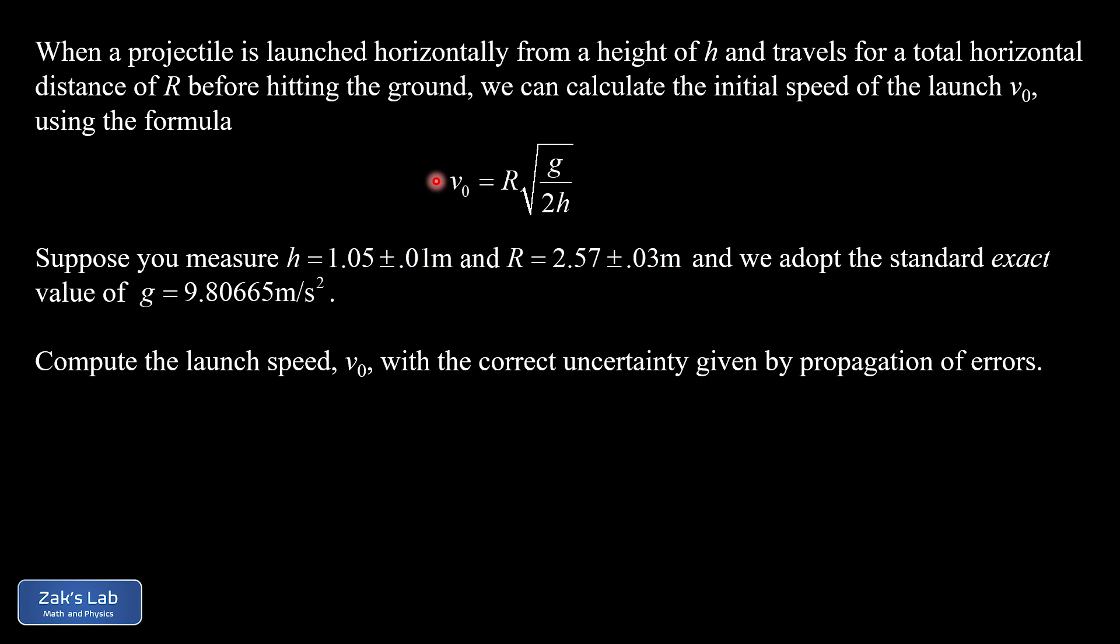And little g, of course, is the acceleration of gravity. So then we're told the measurements that we actually took in the lab. We have an initial height of 1.05 plus or minus 0.01 meters, so there's a little bit of uncertainty in that. And then we have a range of 2.57 plus or minus 0.03 meters.